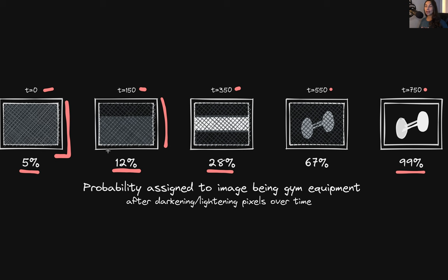So essentially we are darkening and lightening the pixels in an iterative fashion, and each time we pass the updated image to the model to see if this lowers or increases the probability assigned to the image being gym equipment. We take that feedback and either reverse or increase the lightening or darkening based on whether it improved the probability. By observing the output probability after each iteration on each pixel, we can find which direction to incrementally move each pixel so that the model continues to increase the probability that it assigns to the image being a piece of gym equipment.